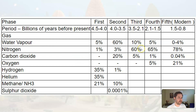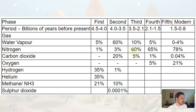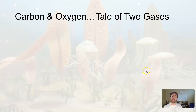Looking at the chart here, we can see again carbon dioxide is on the decrease, oxygen is on the increase, definitely not to what we see today, but it's this decreasing carbon and increasing oxygen that's going to be of importance. So it's a tale of two gases.